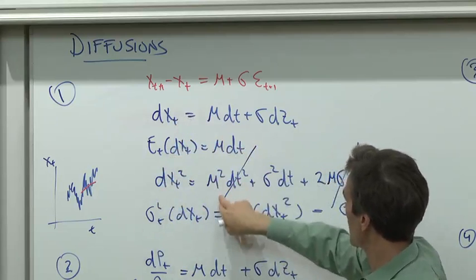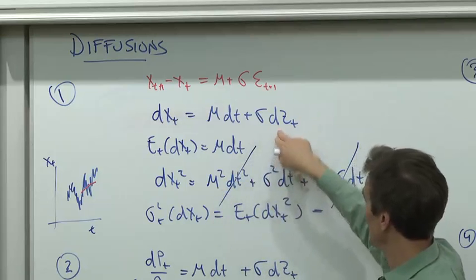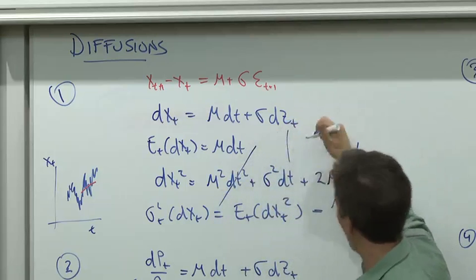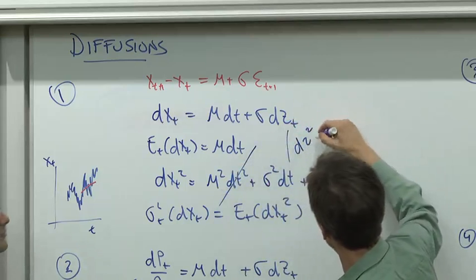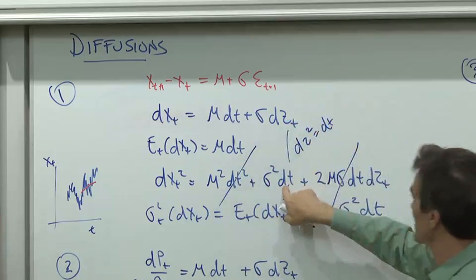You get mu squared dt squared. You get sigma squared dz squared is dt, right? That's the key. I said we were going to use that. dz squared is dt. So that's that term. And then a cross term.